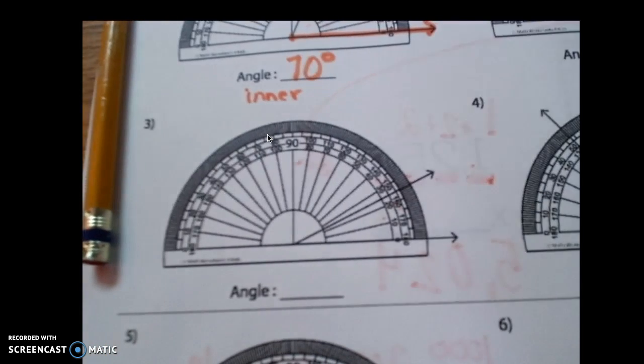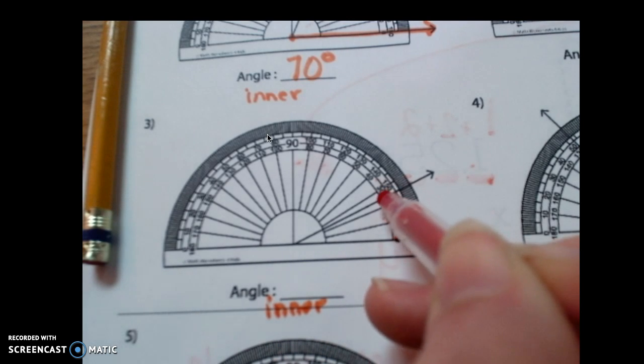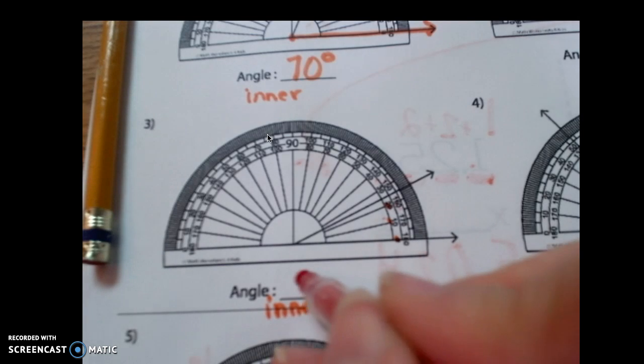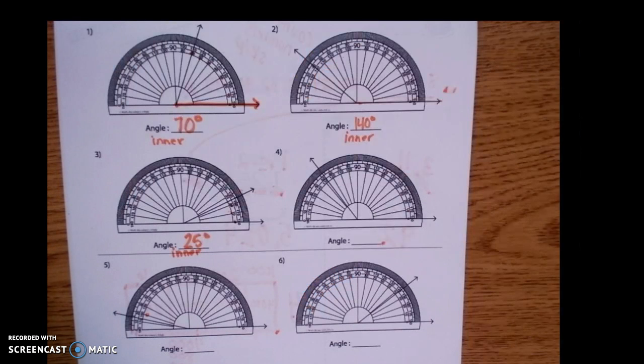Come down to number three. The ray is pointing this way. So we're using the inner scale, 10, 20, 25. 25 degrees.